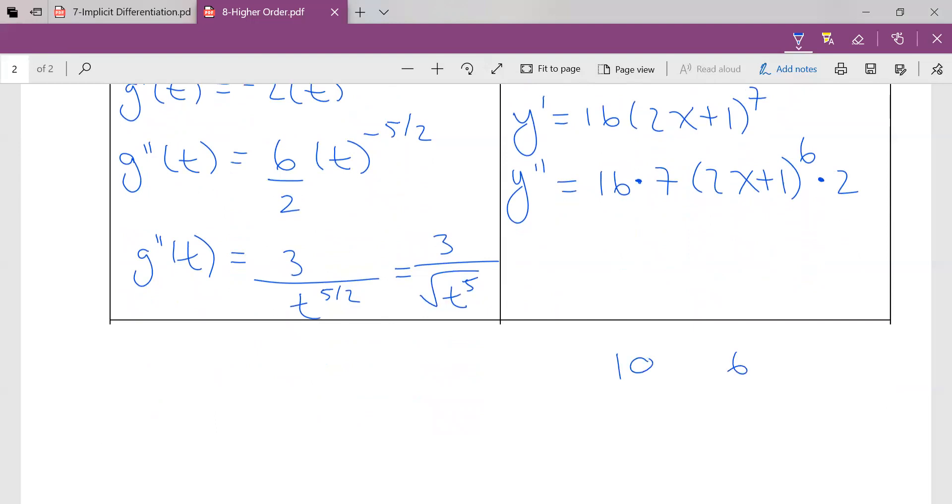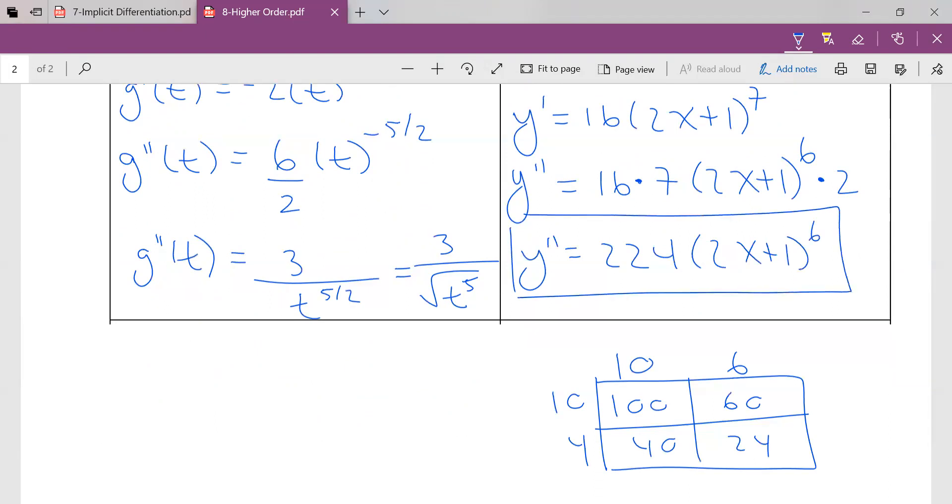I don't know. I don't have a calculator with me, right? Calculators are the work of a double. No, they're not. What is that? 224. So y double prime is 224, 2x plus 1 to the exponent 6. There it is.